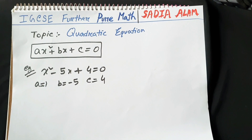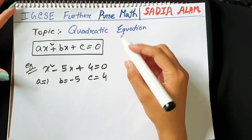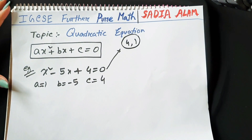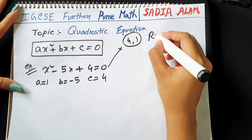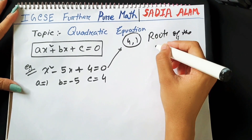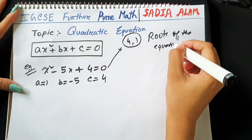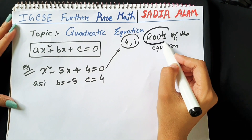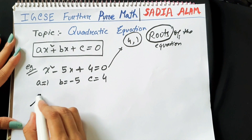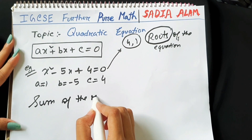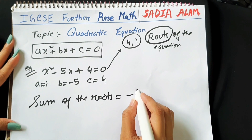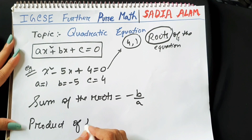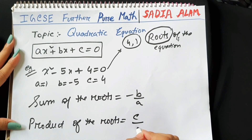If we solve this equation using the middle term method, we get two values of x — 1 and 4. These values of x are called the roots of the equation. We need to know two formulas regarding the roots: the sum of the roots is minus b by a, and the product of the roots is c by a.